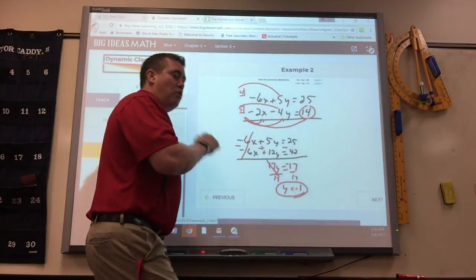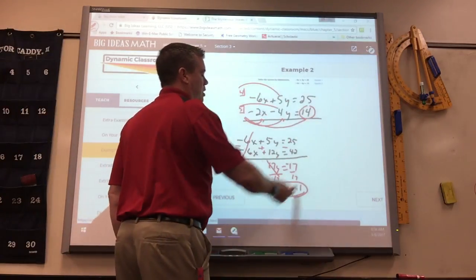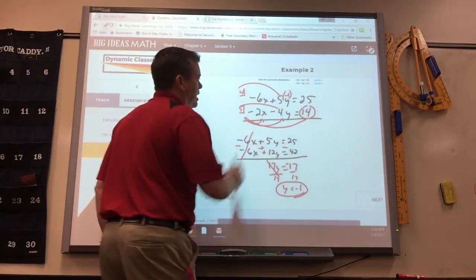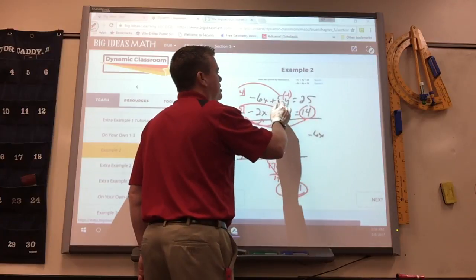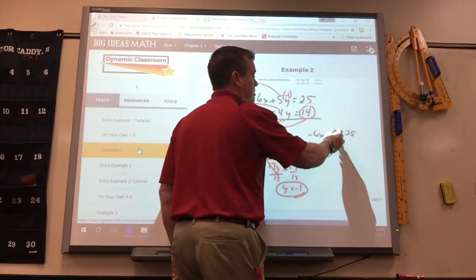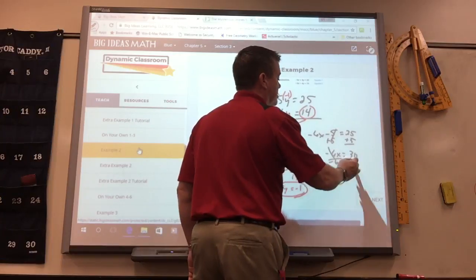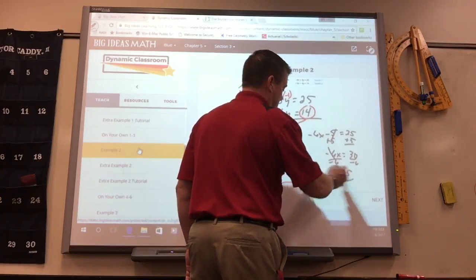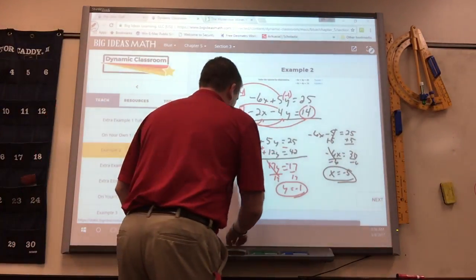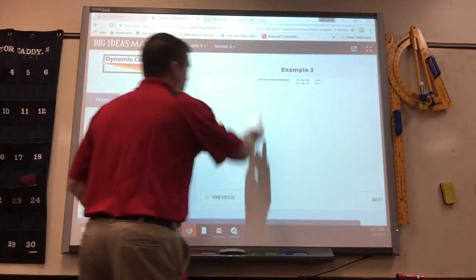Then once you have y, don't forget you got to figure out x. So you just plug that into any one of these equations will work. So say I put it in here. So you rewrite that equation. It would be negative 6x plus 5 times negative 1 is negative 5. And then you solve it. Add 5, divide by negative 6, and then you get negative 5. So x is negative 5. Y is negative 1.